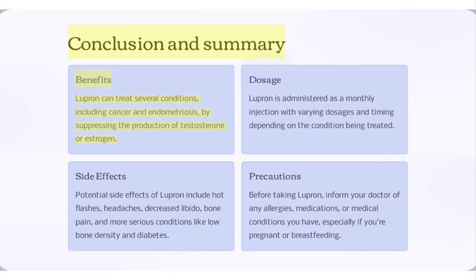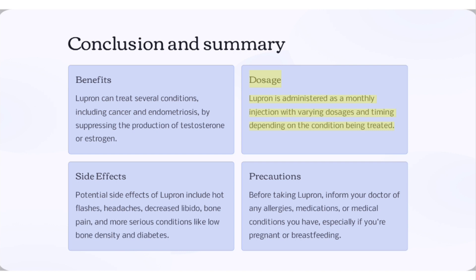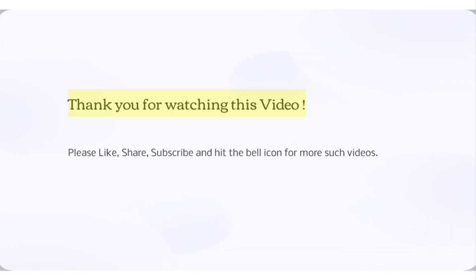Conclusion and summary. Benefits: Lupron can treat several conditions, including cancer and endometriosis, by suppressing the production of testosterone or estrogen. Dosage: Lupron is administered as a monthly injection with varying dosages and timing depending on the condition being treated. Side effects include hot flashes, headaches, decreased libido, bone pain, and more serious conditions like low bone density and diabetes. Precautions: before taking Lupron, inform your doctor of any allergies, medications, or medical conditions, especially if you are pregnant or breastfeeding.